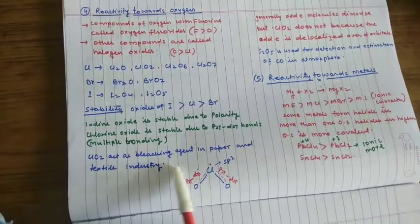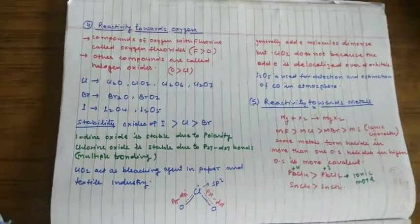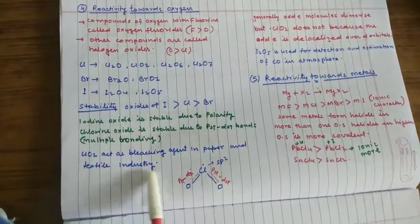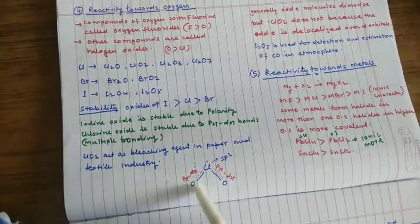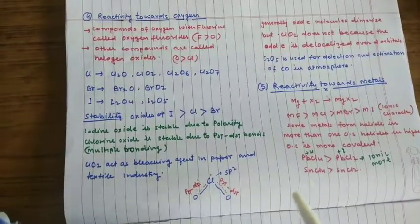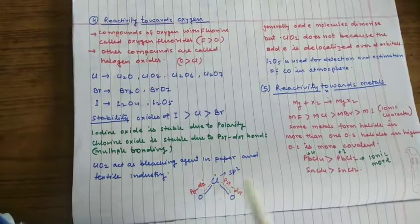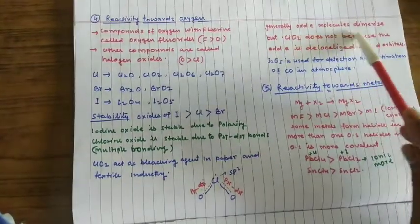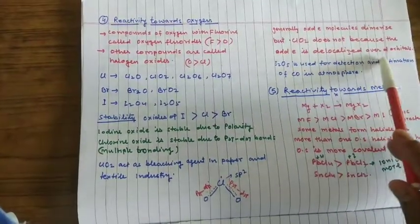Chlorine oxide, ClO2 acts as bleaching agent in paper and textile industry. In the textbook, there is a question asked about ClO2. ClO2 is an odd electron molecule but it does not form dimer. The reason is that the odd electron is delocalized over d orbitals, so its participation in dimer formation does not occur. Generally, odd electron molecules dimerize but ClO2 does not because the odd electron is delocalized over d orbitals.